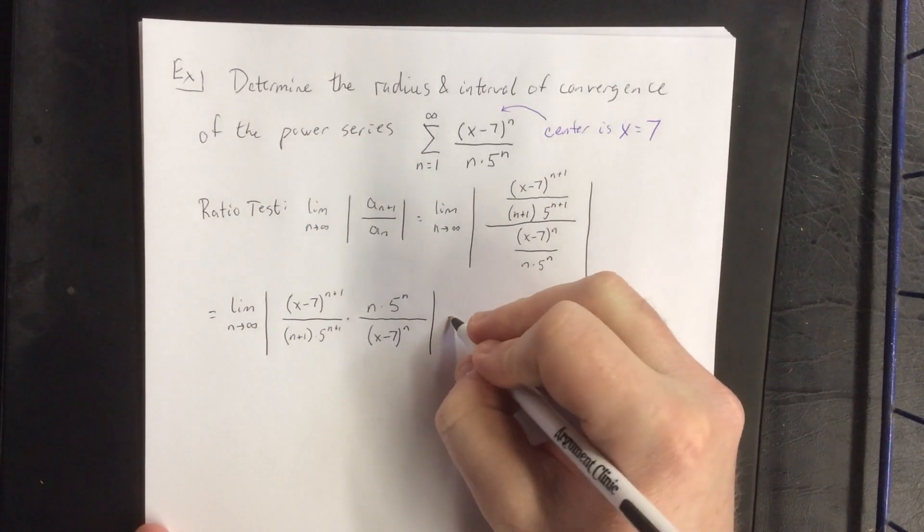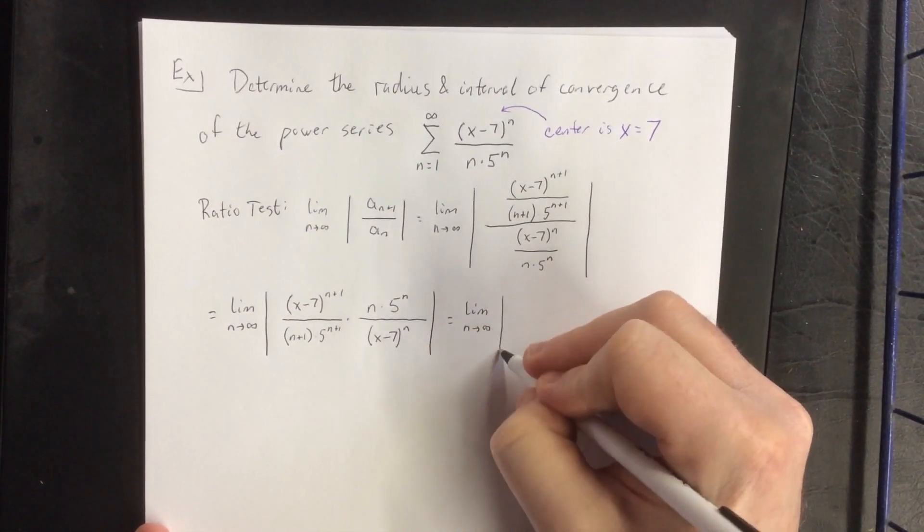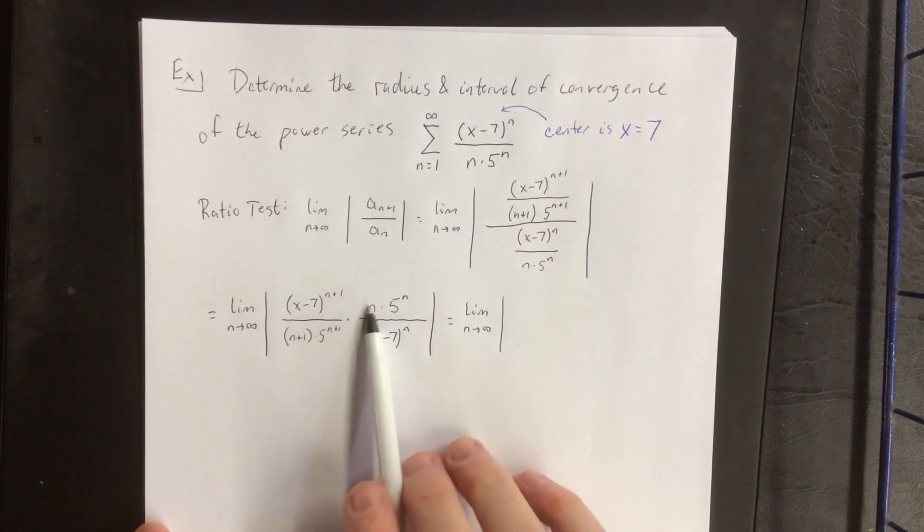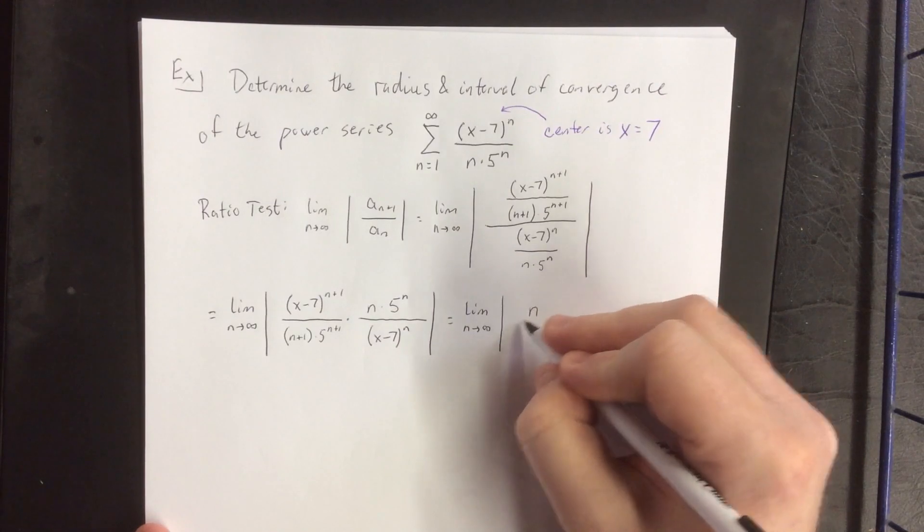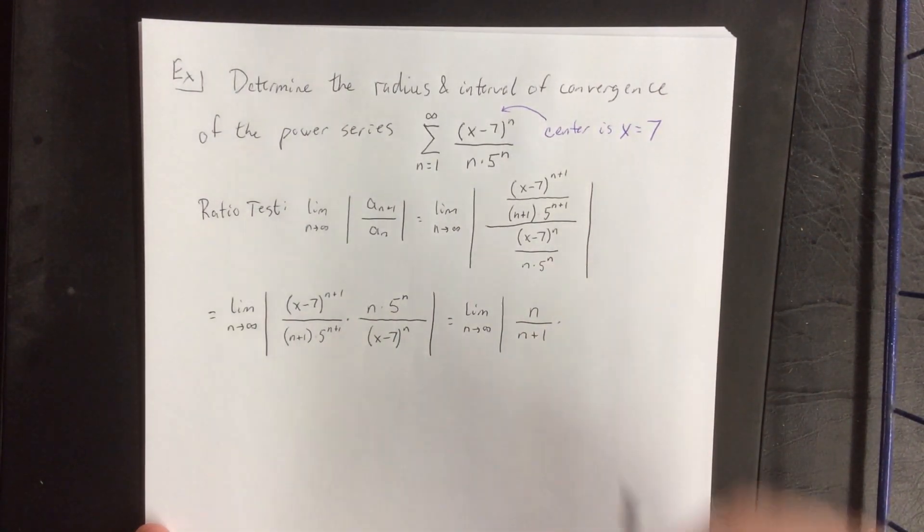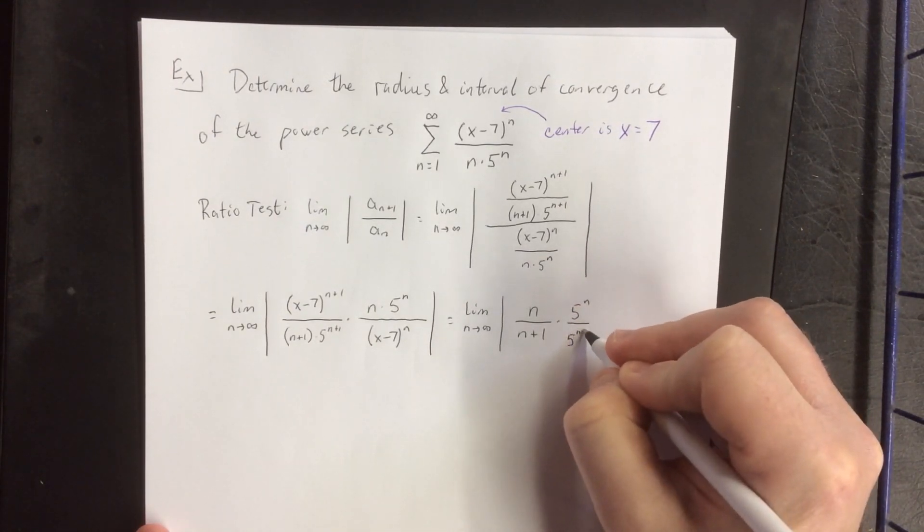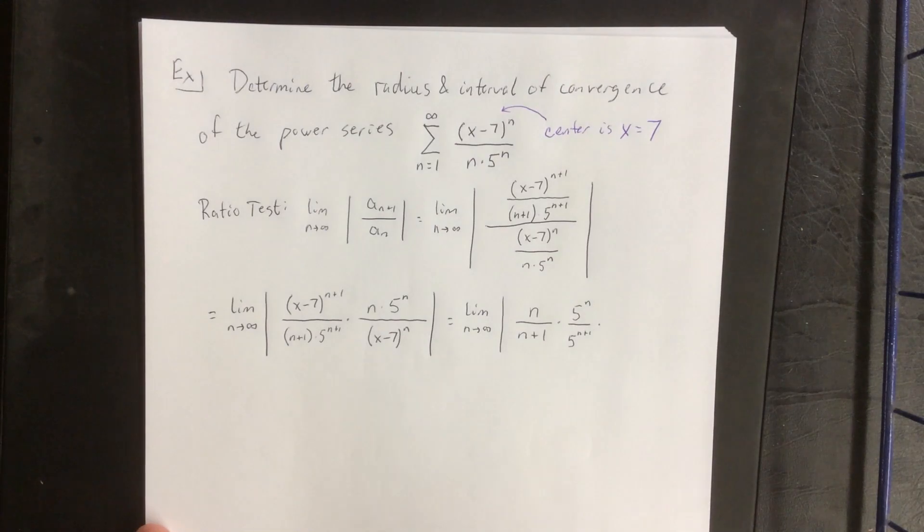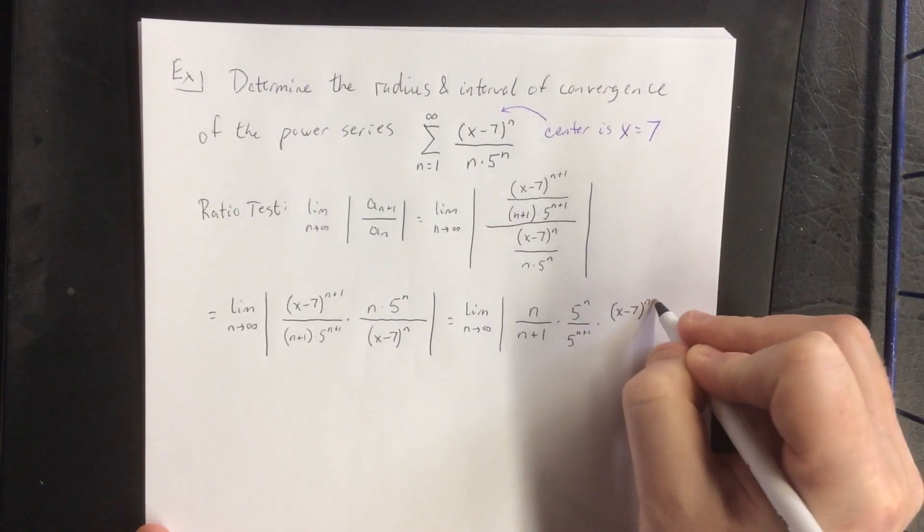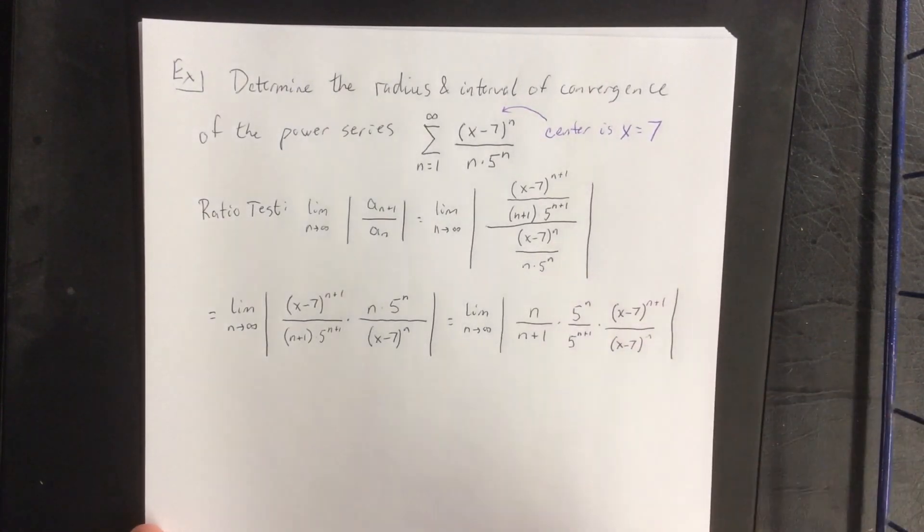What we typically do for the ratio test is to allow n to go to infinity, we're going to group together things that look kind of like each other. For example, the n and the n plus 1 came from the same term, so I'm going to group those together. The 5 to the n and 5 to the n plus 1 came from the same place as well, and x minus 7 to the n plus 1 and x minus 7 to the n came from the same place as well.